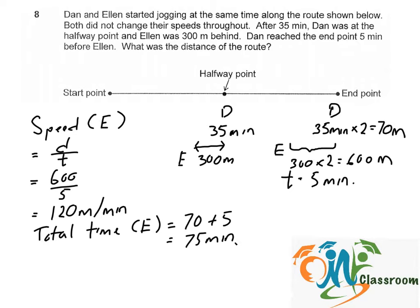So the total distance of the route will be speed times time, equals to 120 times 75, which is 9000 meters.